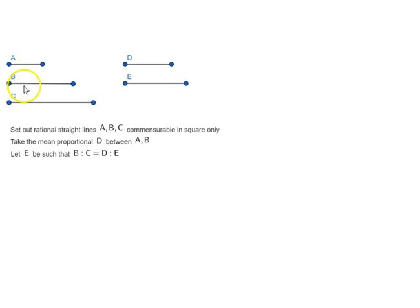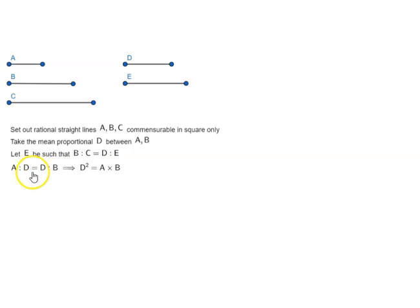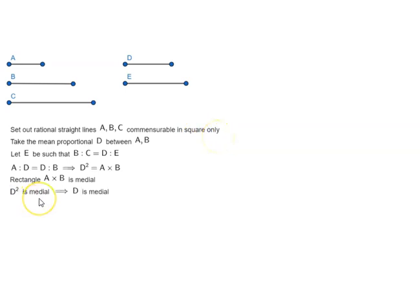Remember, D is the mean proportional between A and B. That means A is to B is equal to B is to D, which means B² equals A times B — the product of the extremes equals the product of the means. Rectangle A by B is medial because A and B are rational straight lines commensurable in square only. D² is medial because A by B is medial, which means D is medial.